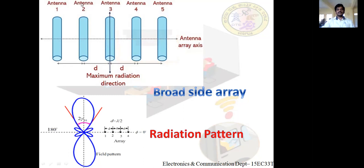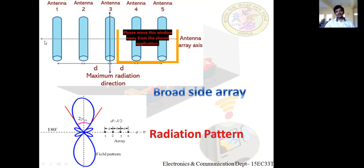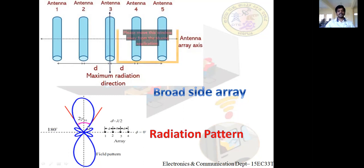In the broadside array, the radiation pattern is produced in the direction which is perpendicular to the antenna array axis. So if the array axis is horizontal, the radiation pattern goes in the perpendicular direction — that is, at 90 degrees. This makes it a bi-directional array. A bi-directional array is one which produces a radiation pattern perpendicular to the direction of the antenna axis.